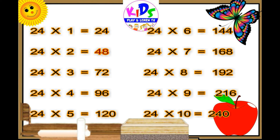24 sixes are 144, 24 sevens are 168, 24 eights are 192, 24 nines are 216, 24 tens are 240.